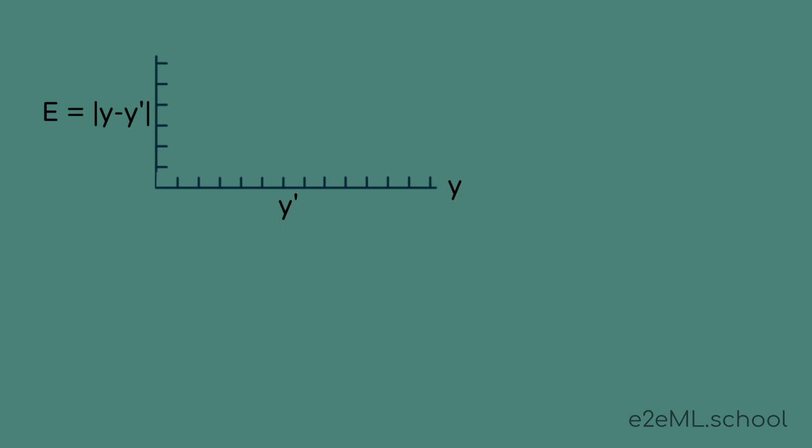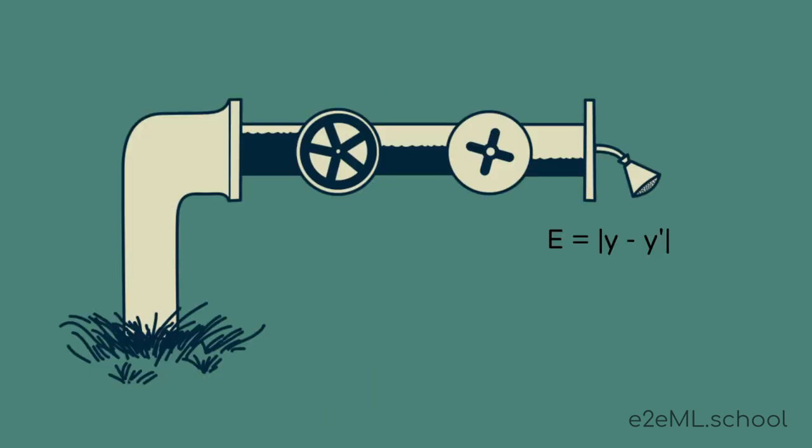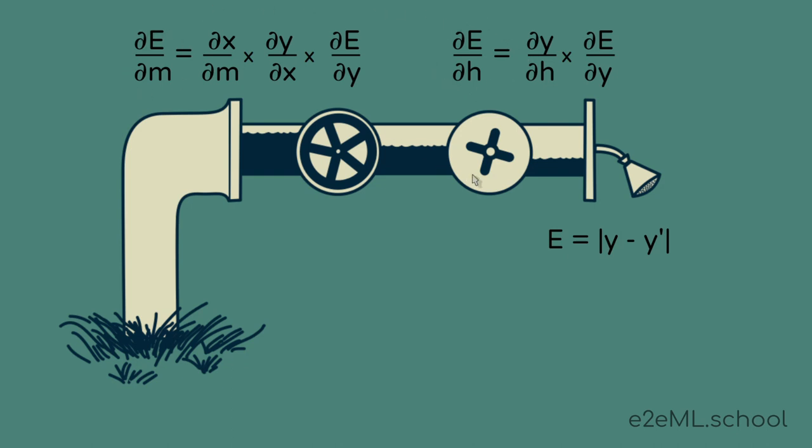Since we're in the business of calculating sensitivities, we can also find the sensitivity of E to changes in our shower flow rate. The derivative of an absolute value is straightforward. dE/dY is one if Y is greater than Y prime, and it's minus one if it's less than Y prime. It's not actually defined at Y equals Y prime, but we can just declare it to be zero. Now we can chain this with our other sensitivities to find the sensitivity of the error to our two valve positions. Now we have one thing we want to change, the error, and two ways to change it. How do we go about it? Do we try to get away with turning just one valve or turn both valves the same amount? There are any number of ways to get the results that we want. Which one do we choose?